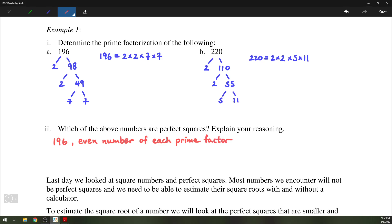Two 2's and two 7's to be specific. Because now we can put those into two equal groups, so 2 times 7 times 2 times 7. And we can see that 196 equals 14 times 14, or 14 squared.